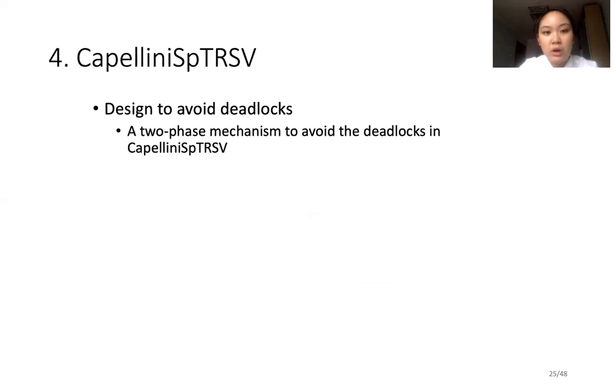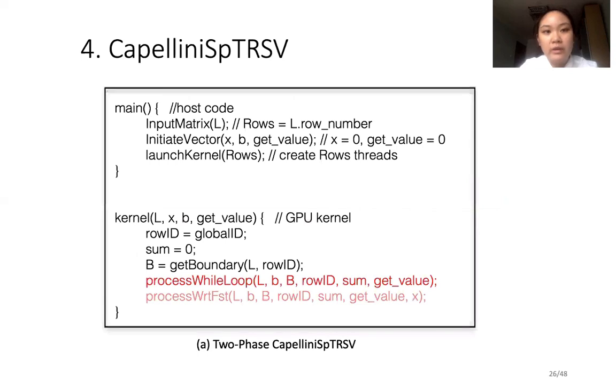The fourth part is the detail of our novel algorithm, Capellini SpTRSV. I will show our three new designs in Capellini to solve the challenges mentioned before. First, we propose a two-phase mechanism to avoid deadlocks. We divide the computation process of a warp into two phases. The first phase is for the elements in the related row of matrix L that has no inter-dependency within a warp. After calculating the element without inter-warp dependency, we compute the interdependent element in the second phase.